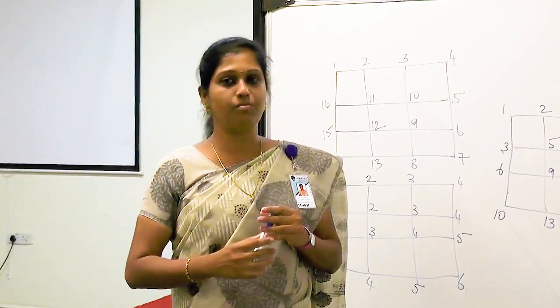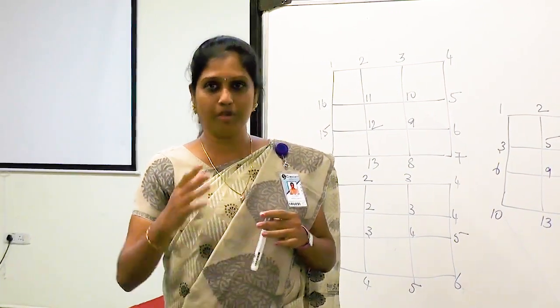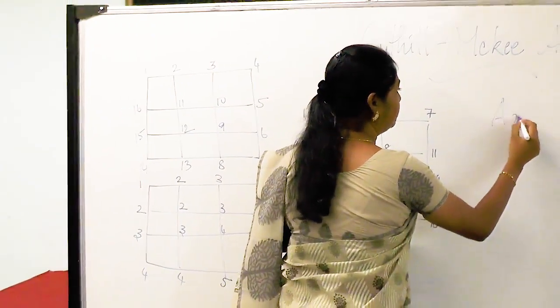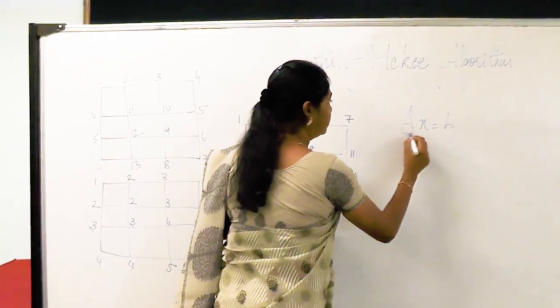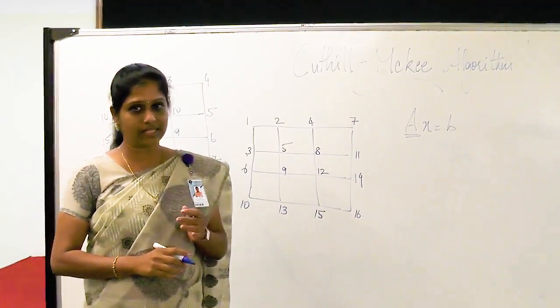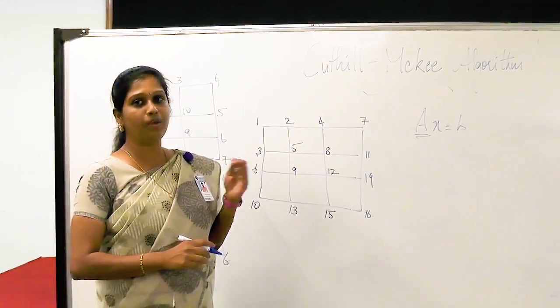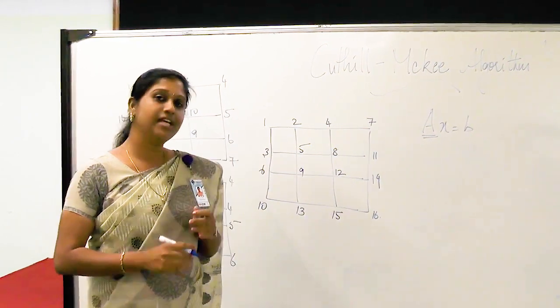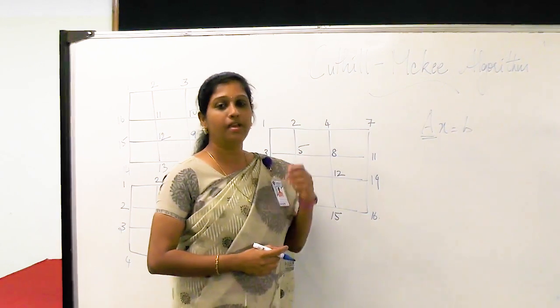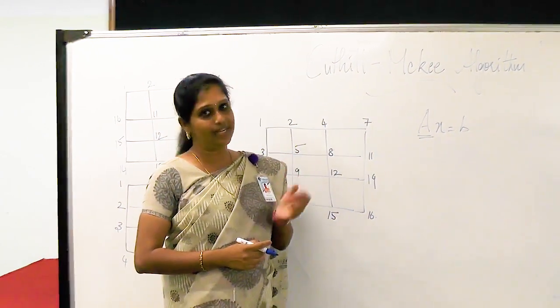Starting with the linear system of equations, we come across system of equations Ax equals B. And suppose if A matrix is a sparse symmetric matrix, then solving these equations is a really challenging task. In that case, we have to take an inverse of A matrix so that we can get the solution of the linear equations.